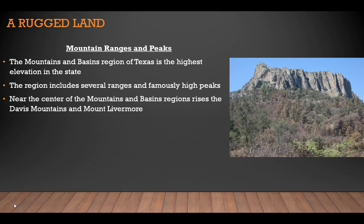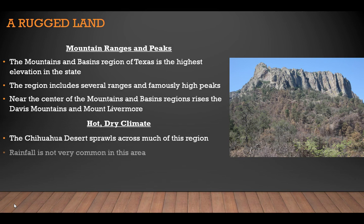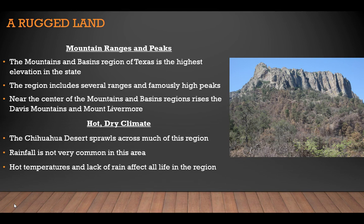The Chizos Mountains are another significant range located near the southern tip of the region. The Chizos make up the largest range in the area to the south, known as Big Bend Country. The Chihuahuan Desert sprawls across much of the region. Rainfall is not very common — higher elevated areas tend to have cooler temperatures and get more rain than the lower basin areas. Some parts get 14 to 18 inches of rain annually, while other parts get less than 14 inches.